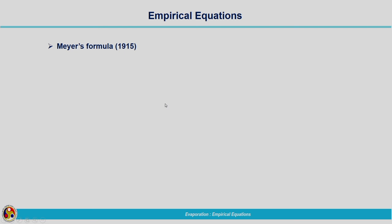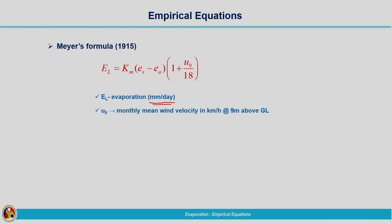The first and most commonly used empirical formula is Meyer's Equation. Meyer's equation gives the lake evaporation as: El = Km × (Es − Ea) × (1 + U9/18). El is the evaporation in millimetres per day — please be careful about the unit, as this is an empirical equation. U9 is the monthly mean wind velocity in kilometres per hour at an elevation of 9 metres above the ground level.